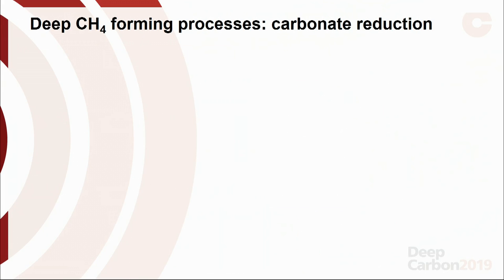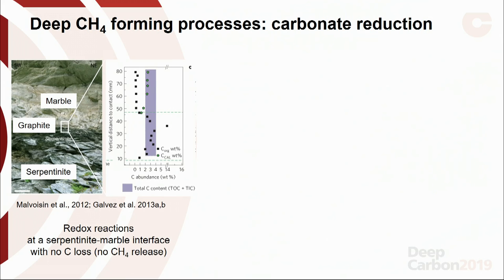Carbonate reduction appears to be probably the most common process at depth. During the DCO decade, several papers have shown evidence for this process. The first papers on this topic investigated the reduction of carbonate in marbles in contact with serpentinites at blueschist facies conditions, about 40 kilometers depth. This is a special case because there is clear evidence for reduction, but no evidence for methane degassing — the carbon budget across the reaction zone is perfectly balanced, so the carbonate goes into graphite without any carbon loss.